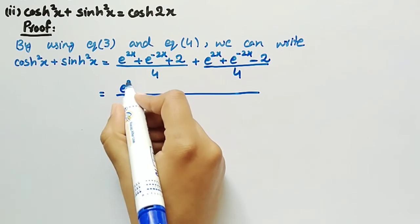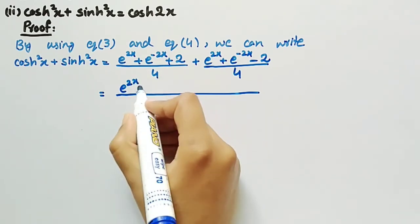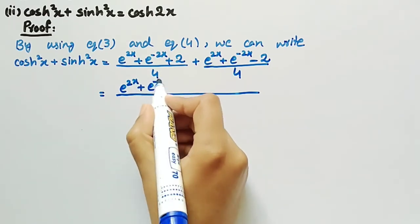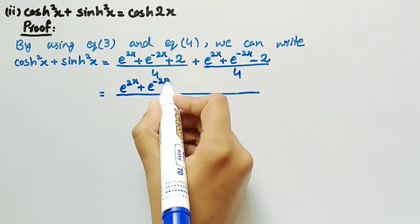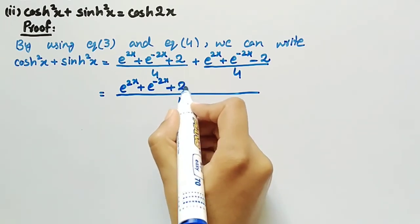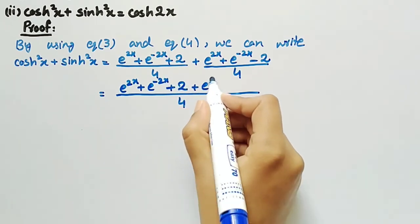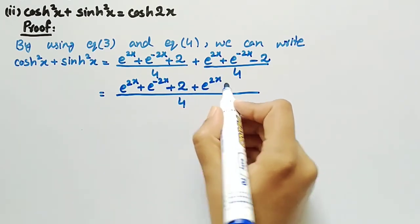In the numerator the terms will be: e^(2x) plus e^(−2x) plus 2 plus e^(2x) plus e^(−2x) minus 2.